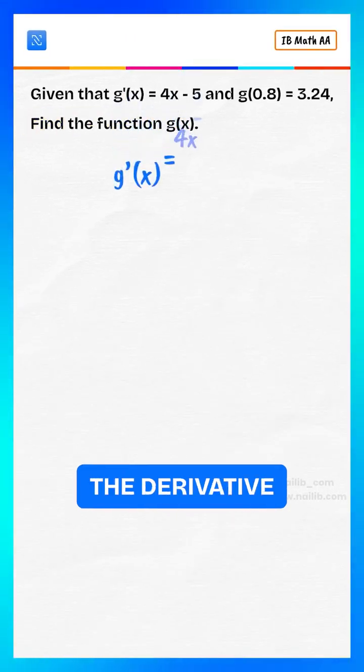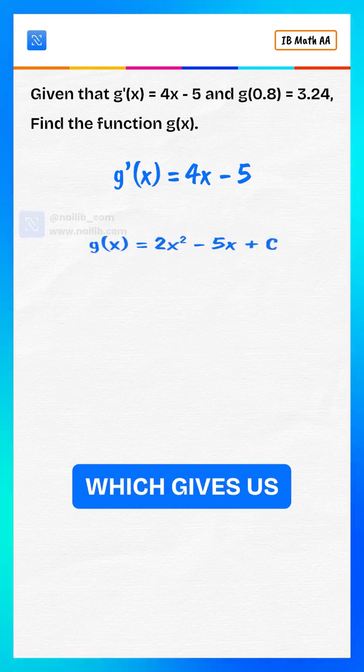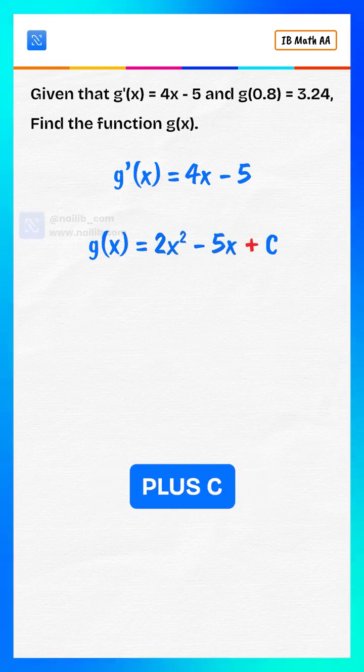We're given the derivative. To find g of x, integrate both sides, which gives us g of x equals 2x squared minus 5x plus c.